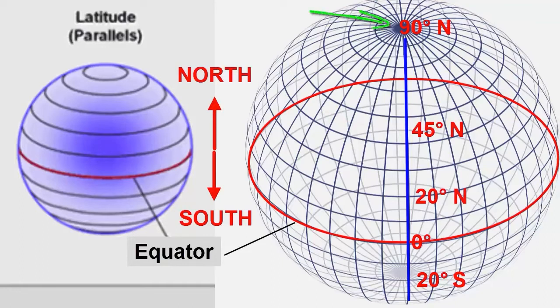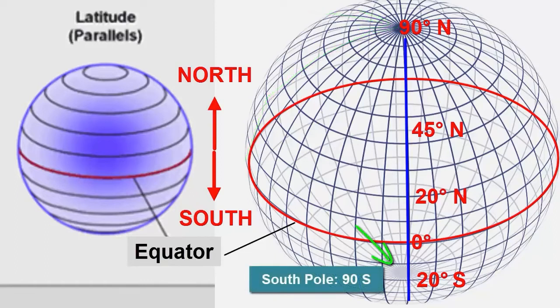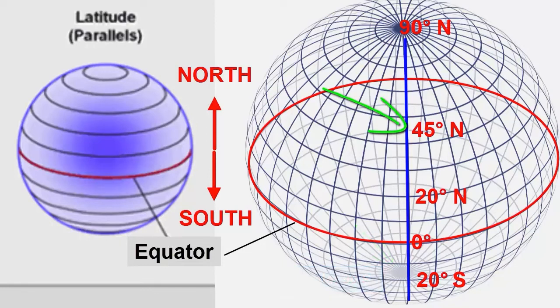If we travel to the north pole, we have traveled one-quarter of a circle away from the equator, or 90 degrees north latitude. The south pole is at 90 degrees south latitude. Halfway in between the equator and the poles, we travel 45 degrees north or south.